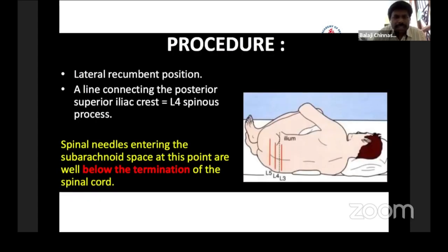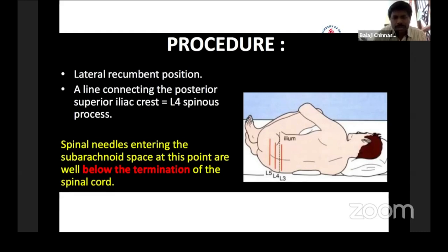The procedure is done in the lateral recumbent position. Remember the L3-L4 space — it is exactly the line connecting the posterior superior iliac crest. It is the place where the spinal cord ends, and hence it is safer to do the lumbar puncture. If the baby is an infant or newborn, you can even go below to L5-S1. But the usual position is L3-L4 or L2-L3.